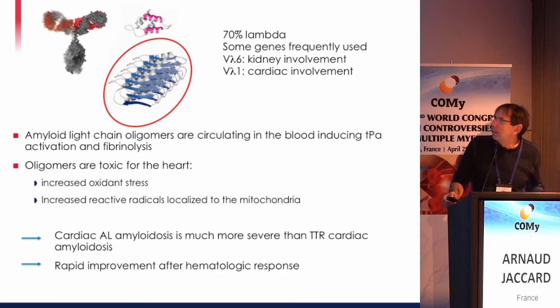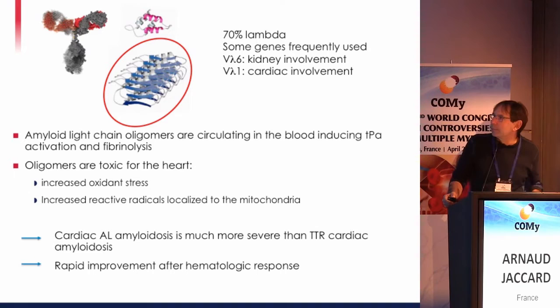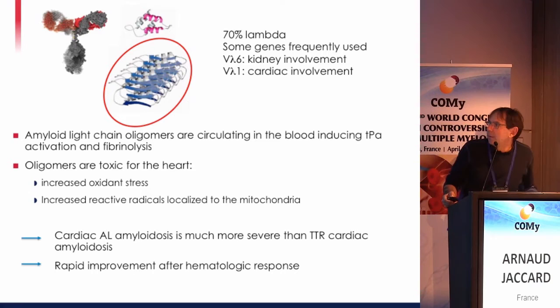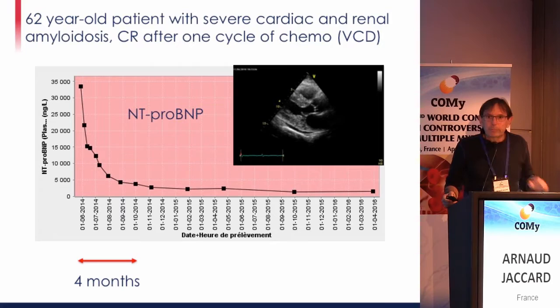The light chain is usually lambda. Certain chains are frequently used and they drive the organotropism of the disease. Amyloid light chains form oligomers that circulate in the blood, activating tPA, forming fibrils, and they are toxic for the heart by increasing oxidant stress and reactive radicals localized to the mitochondria. Cardiac amyloidosis is much more severe than TTR amyloidosis.